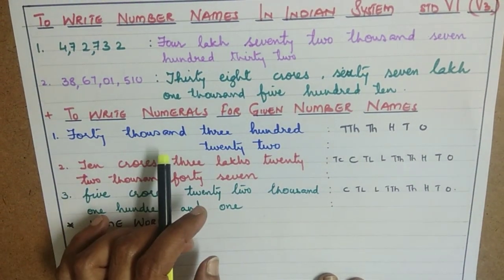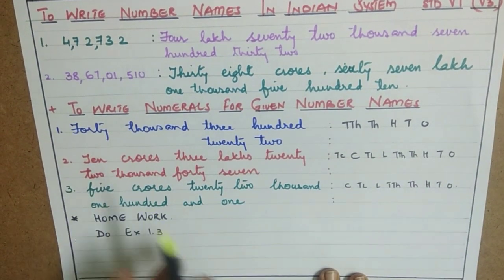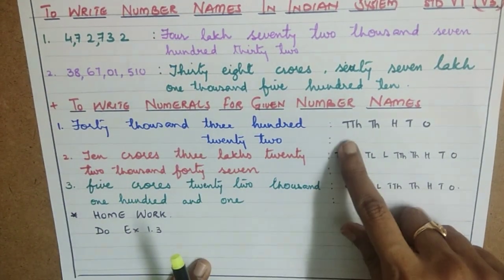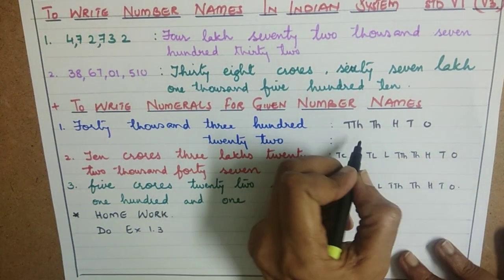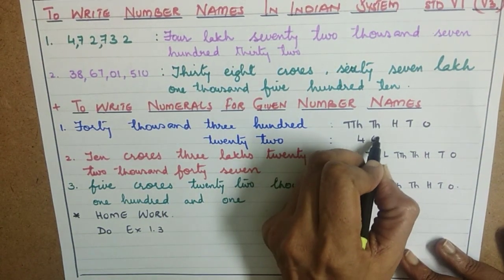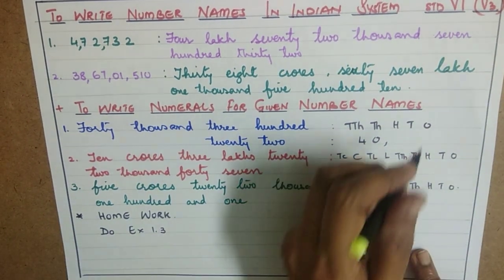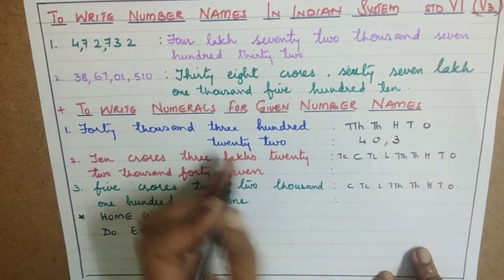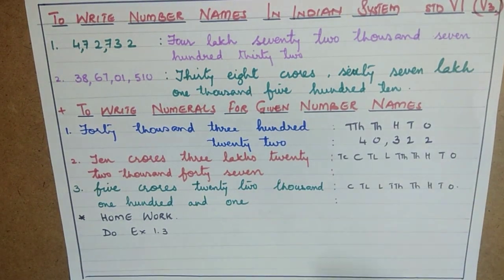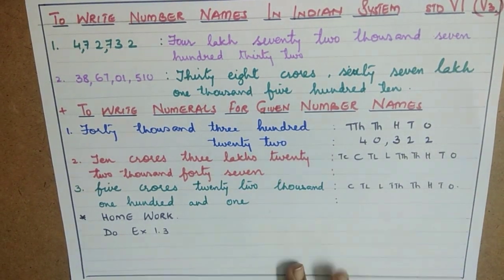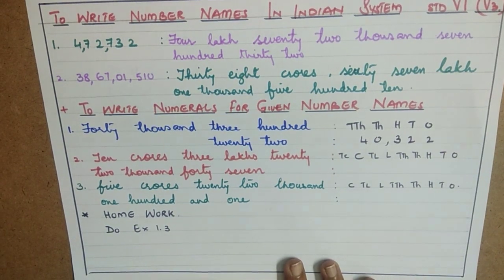40,000 — how many thousands are there? 40,000: so 4 is in the ten thousands place, and 0 is in the thousands place. Then 300: so 3 is in the hundreds place. 2 in the tens place, and 2 in the ones place. So now you can read the number as 40,322.